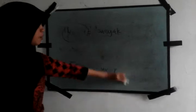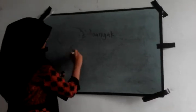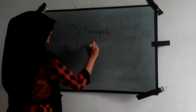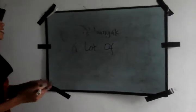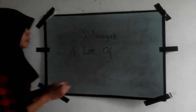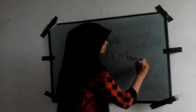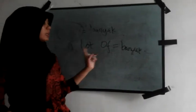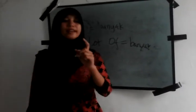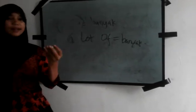Next, I want to explain about a lot of. A lot of — the meaning is banyak (many). A lot of can be used for items that can be countable nouns or uncountable nouns.